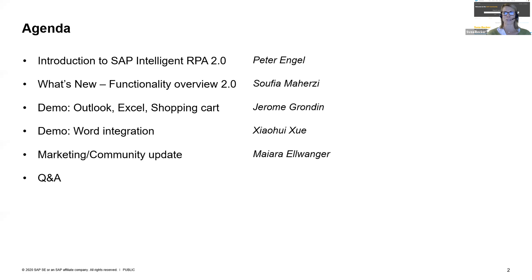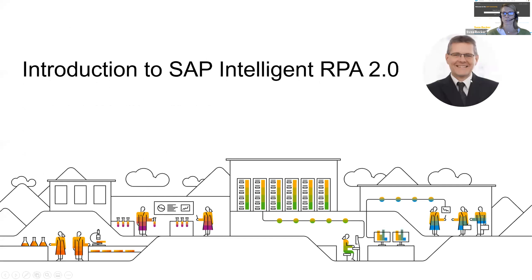I'll hand over to Peter and remove my video because I have a little issue with my internet connection today. I hope everyone can join and proceed on the call. Have fun. My name is Peter Engel. I'm the solution owner for Intelligent RPA process automation, and I want to tell you something in general about IRPA 2.0, and then later on we'll go into more details.